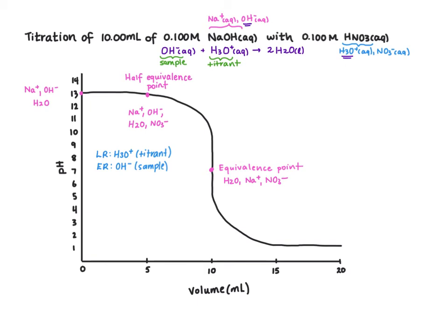Next up we're going to look at just past our equivalence point. At this point we've now added more acid than we needed to react with the initial base. So at the equivalence point we've used up all of the base in our sample, so now we're adding extra acid.